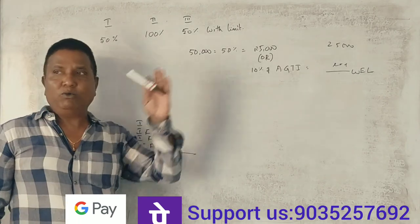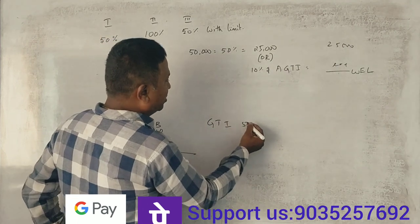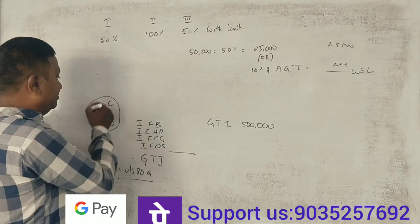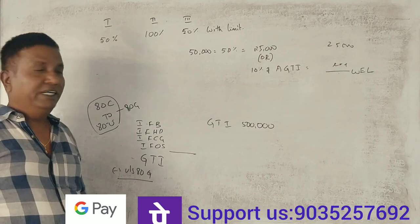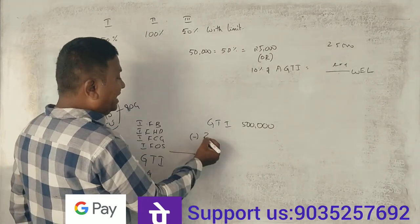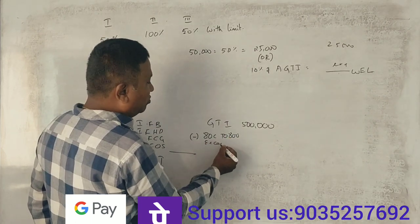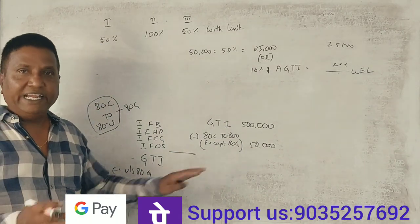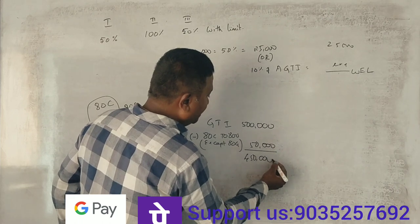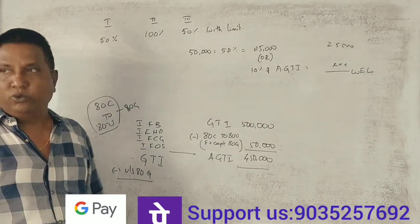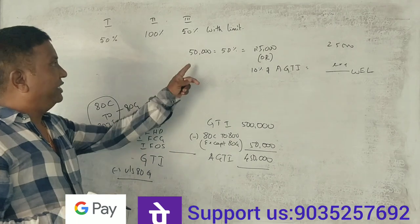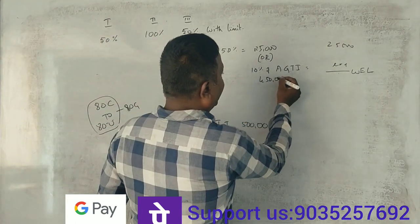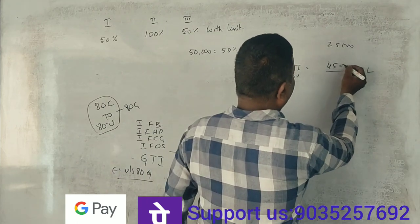Here's an example. Suppose gross total income is 5,00,000. 80C and 80U are deductions of 50,000. Adjusted gross total income is 4,50,000. If you donate 50,000, 50% is 25,000. Now, 10% of adjusted gross total income of 4,50,000 is 45,000. Compare 25,000 with 45,000.